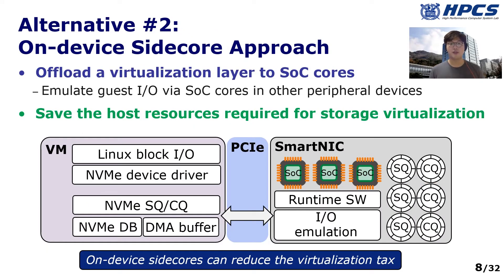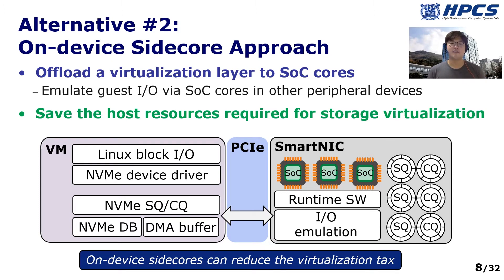To save the host resources required for storage virtualization, a recent study offloaded the virtualization layer to system-on-chip cores in other peripheral devices. The SoC implementation allows the runtime software to access virtual NVMe queue pairs mapped in the host machine memory through DMA. It also allocates the physical NVMe queue pairs in the SoC memory space and provides the allocations to physical NVMe devices to make them interact with the SoC cores directly, saving the host's CPU resources.